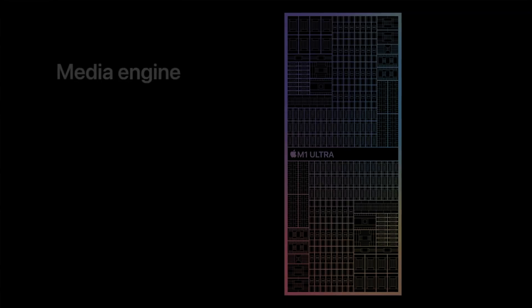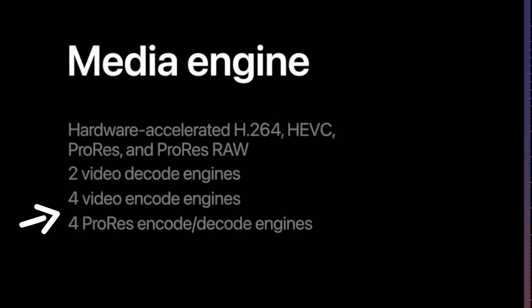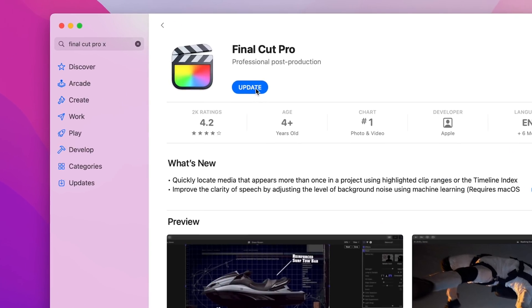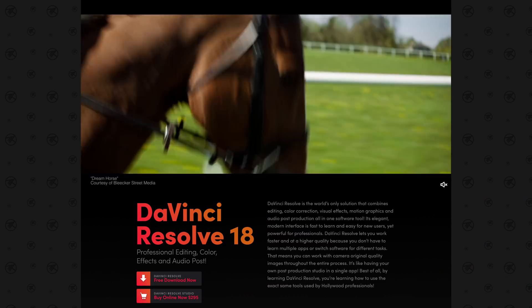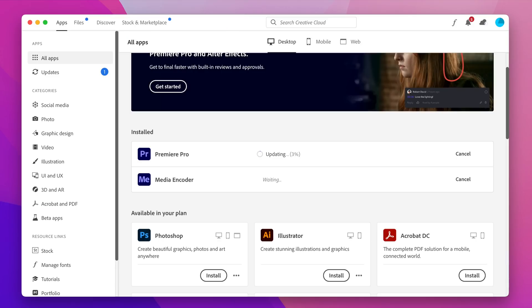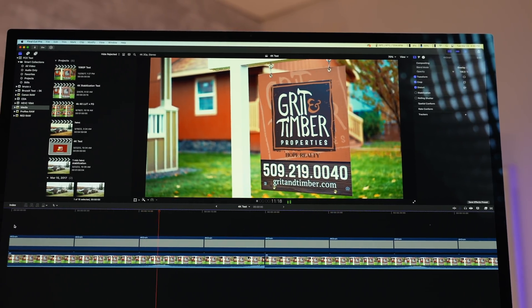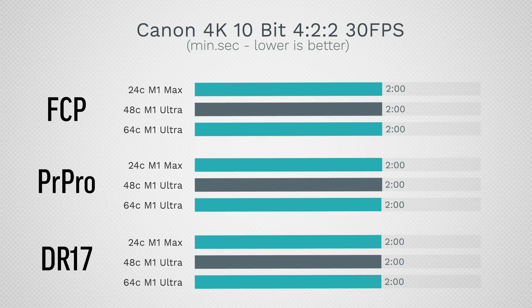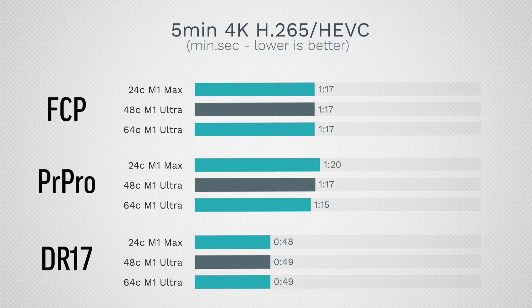The next issue is the quad encoders in the M1 Ultra. We waited for software updates — Final Cut was updated, DaVinci Resolve released version 18, and Premiere was updated — and this is still an issue. We got the Ultra as our main video editing machine for super fast export times, but when you look at the charts, export times are the same in Final Cut, DaVinci Resolve, and Premiere Pro. There's only a slight difference, when it should be twice as fast.